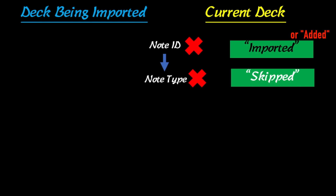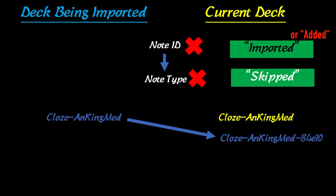For example, say we have the Cloze Ankiing Med note type, and your current deck also has Cloze Ankiing Med but you've changed some of the field names. What Anki will do is say the names are the same but the fields aren't, so it's going to import it and add a bunch of random numbers and letters to distinguish it.